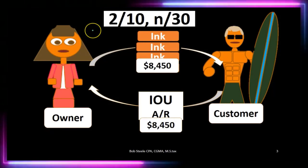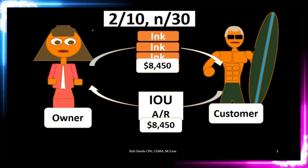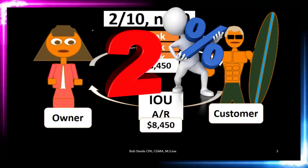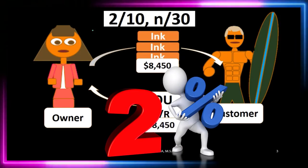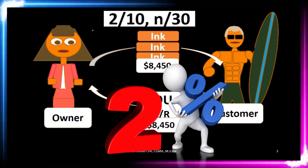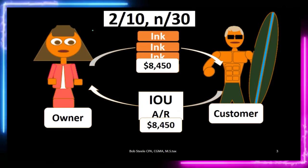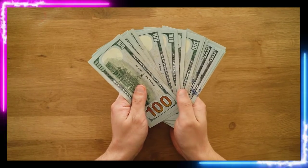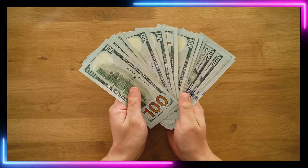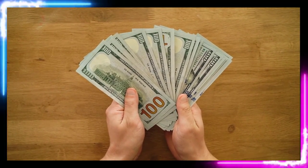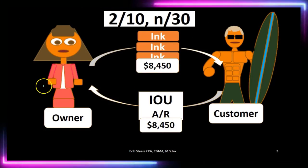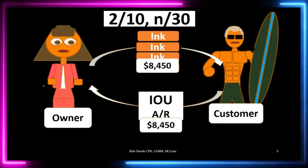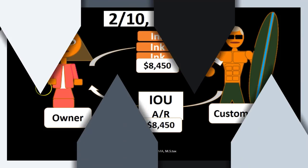For example, terms might be 2/10 n/30, which means we'll give a two percent discount if paid within 10 days, otherwise we want it paid within 30 days. The term might simply be net 30, or it could be net 15 days, with 30 days often being somewhat more standard terms. The period between the point in time of the sale and the 30-day credit period defines this concept.